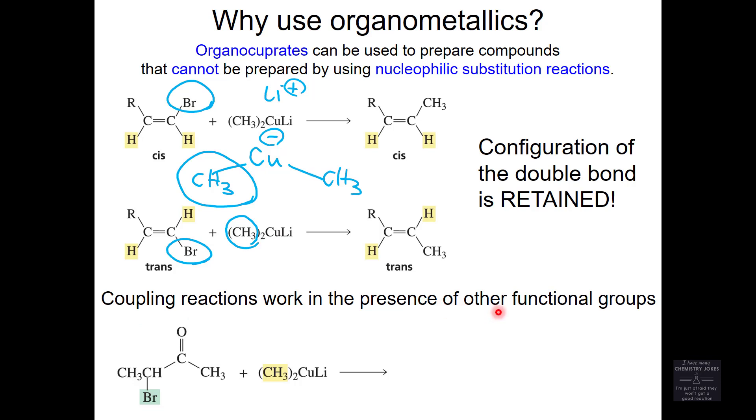Coupling reactions like these work in the presence of other functional groups. I've got this ketone here, but I don't care. This thing is worried about taking place of the BR. That's all that happens. You don't worry about the rest. You just take the place of the halogen. Organocuprates are some of the most flexible reagents we will talk about. We won't see as many of those as we see Grignard reagents and organolithiums, but they're some of the most flexible reagents you will see.